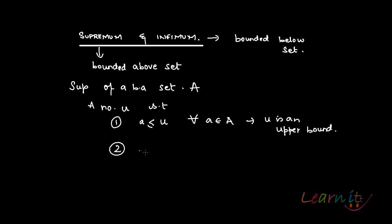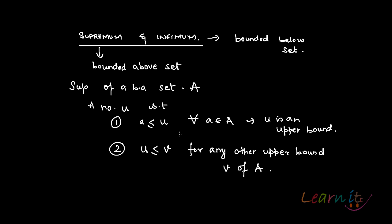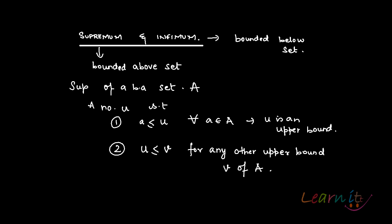Number two: u is less than or equal to v for any other upper bound v of A. What we mean by this is that u is an upper bound, plus u is the least upper bound.